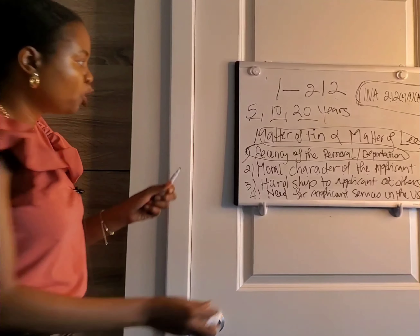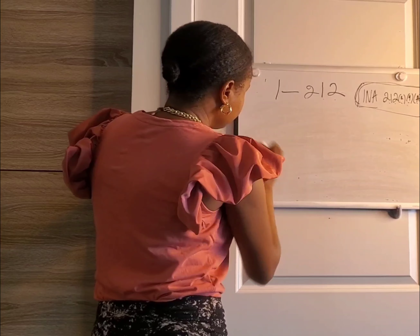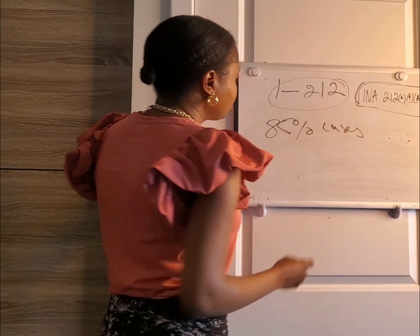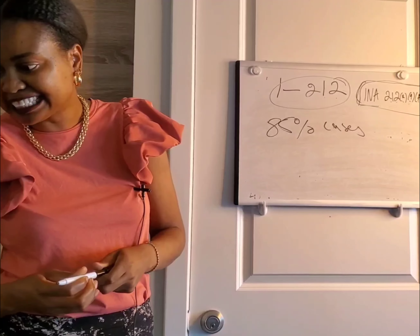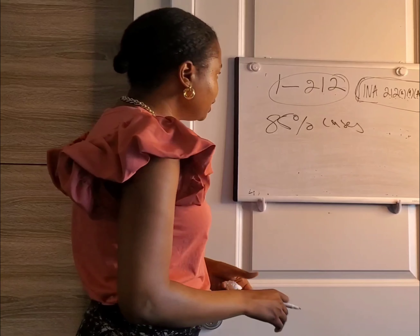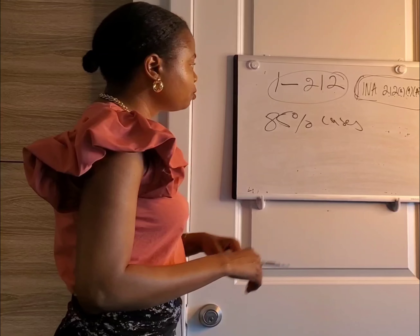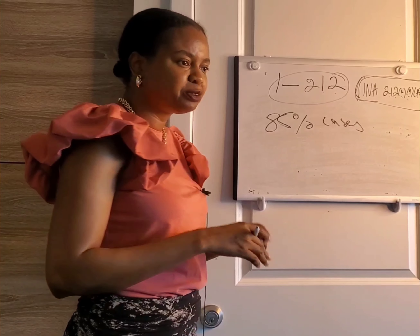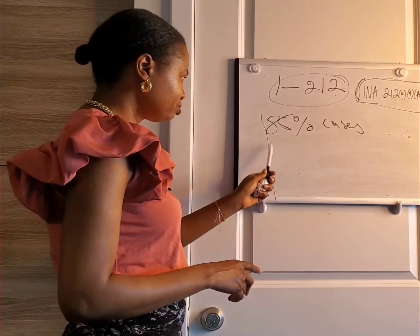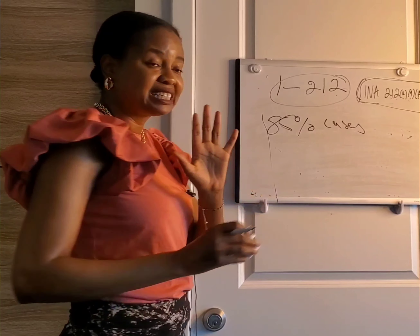If you're trying to file this form on your own, most of the time you will miss it. At least 85% of cases get denied because people don't follow all four points — they don't follow the standards laid out in Matter of Tin and Lee. They just try to reapply because they want to come back. I had a consultation with a potential client yesterday; we couldn't apply because looking at those points, he needs more time — at least one more year — to rehabilitate himself and present his case in the best light possible.